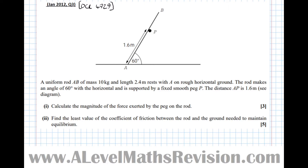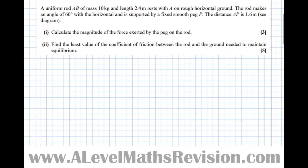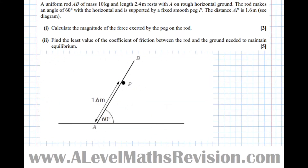Part one: calculate the magnitude of the force exerted by the peg on the rod. First, let's draw a labeled diagram with all the forces on. We start with the weight of the rod, which is 10G. The peg pushes the rod perpendicular to its point of contact — we'll call that reaction Rp, meaning reaction at P. There's also the normal contact force from the ground pushing the ladder up, which we'll call RG, standing for reaction at the ground.